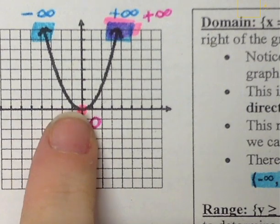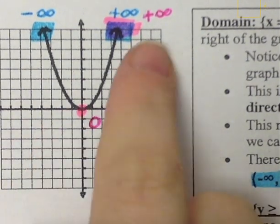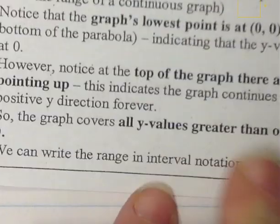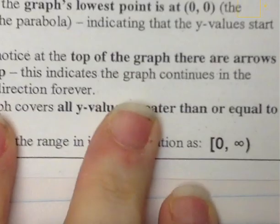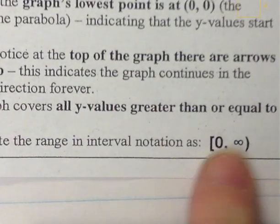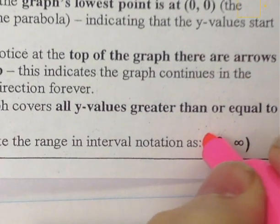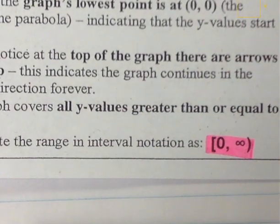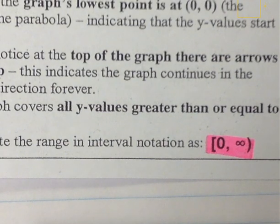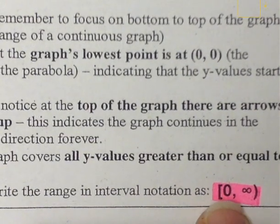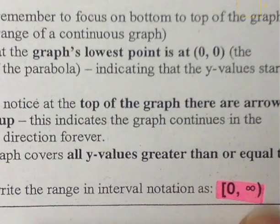It will be closed at the 0 because it actually touches that coordinate, but again, infinity cannot be reached, so it will be an open bracket. So instead of being negative infinity to infinity like our domain was, it will be 0 to positive infinity, because this parabola does have a starting point — it does not go down forever, but it will go up forever. Interval notation: closed bracket, 0, comma, positive infinity, open bracket.